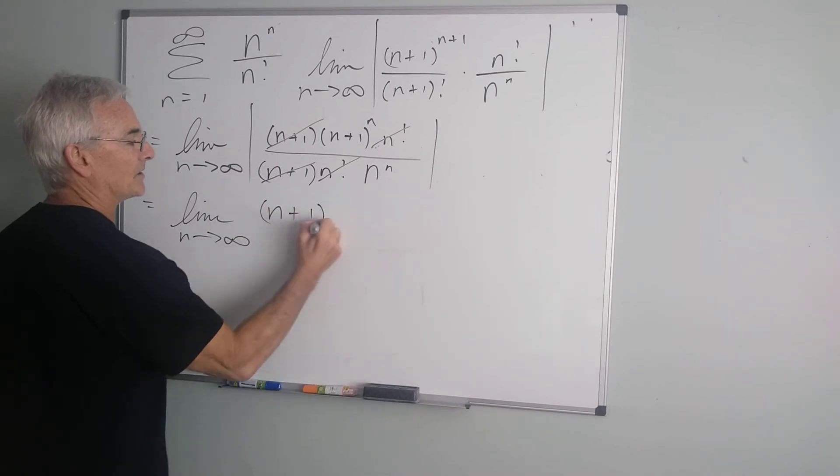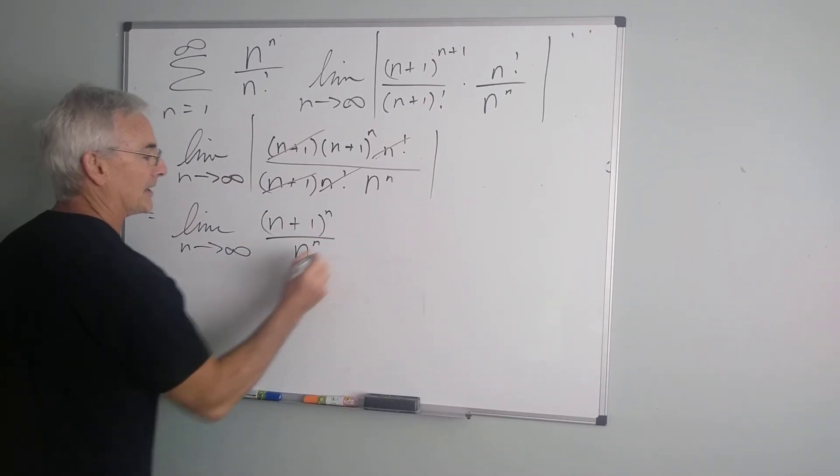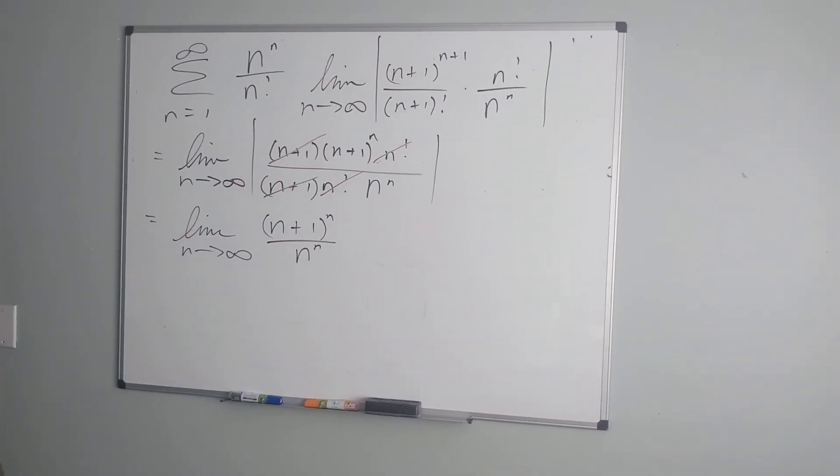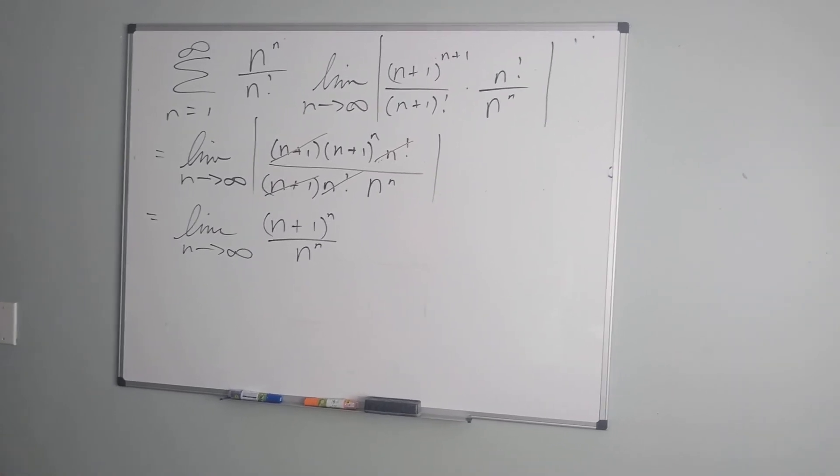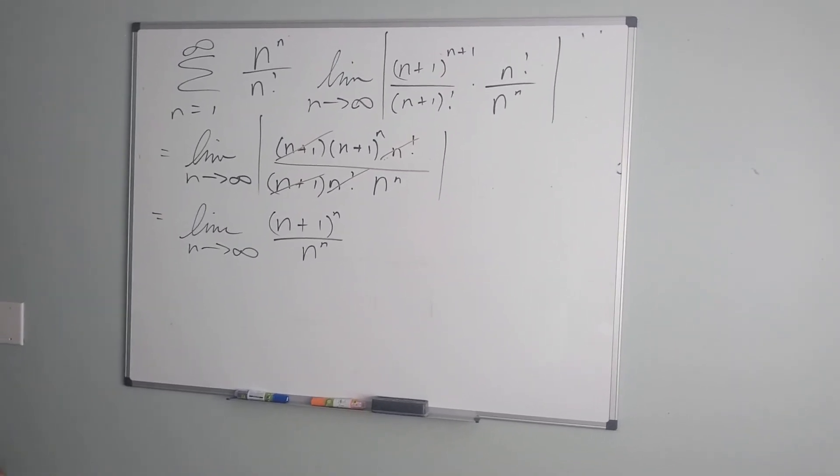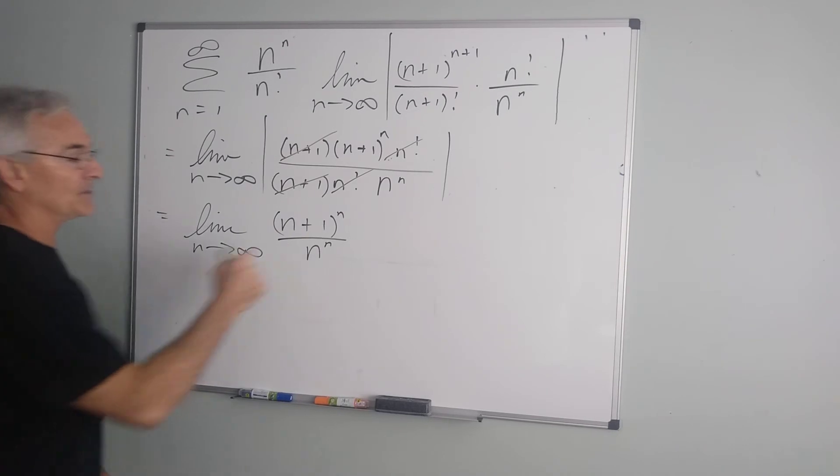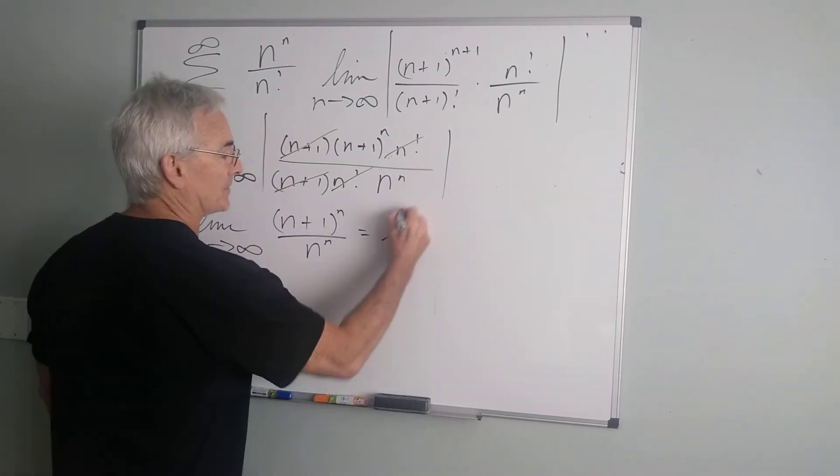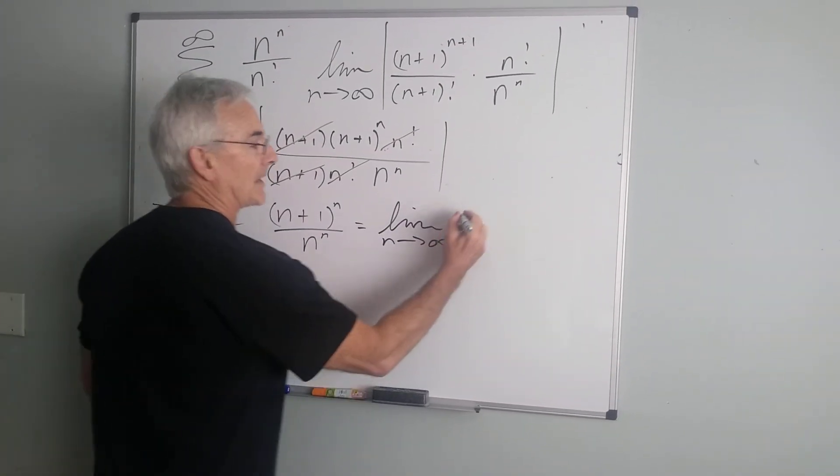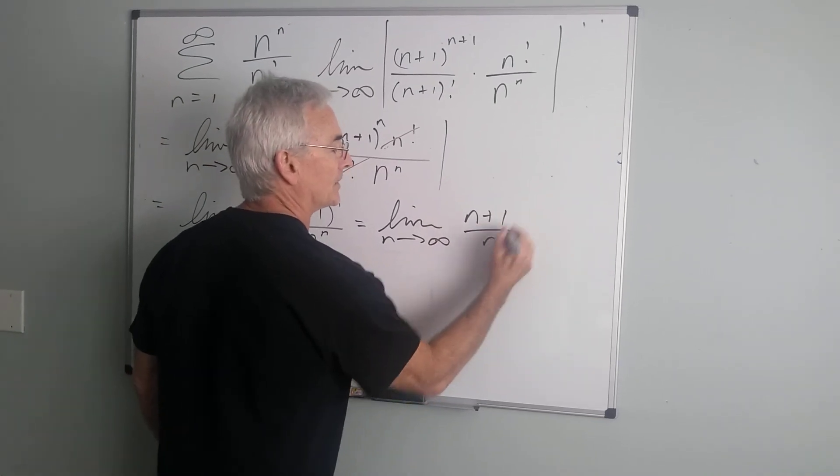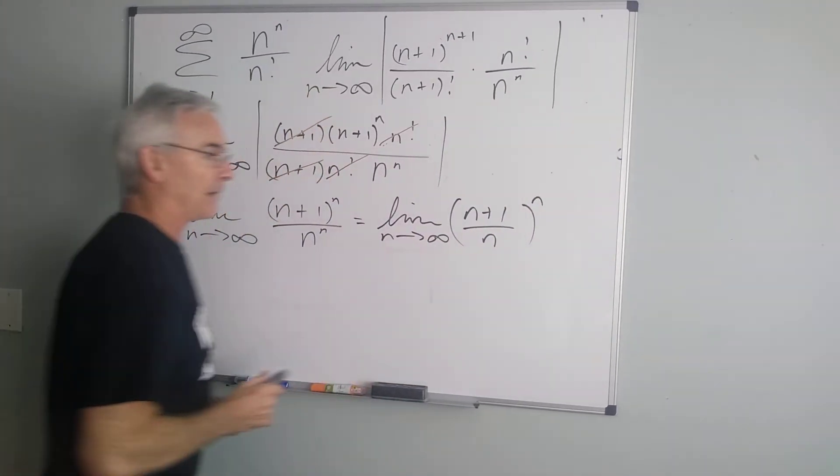So, I have n plus 1 to the nth over n to the nth. Both terms are growing without bound, and because this is not a rational function, I can't use any exponent argument here, but I can use the fact that they have the same exponent, and write it as n plus 1 over n, all raised to the nth power.